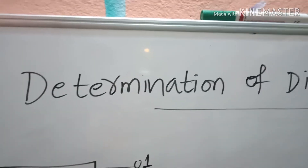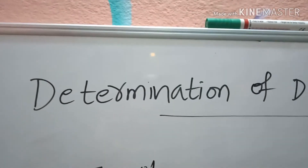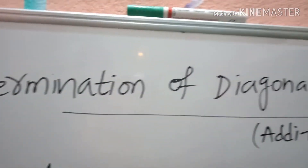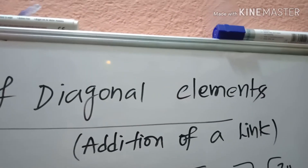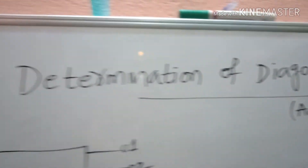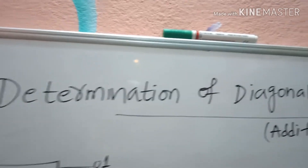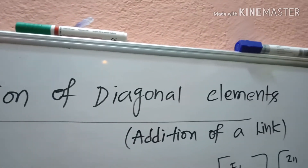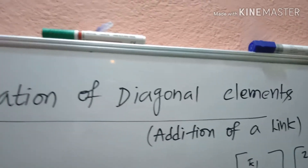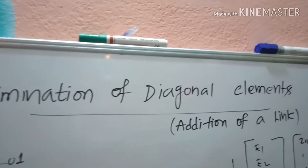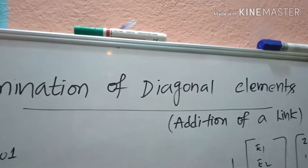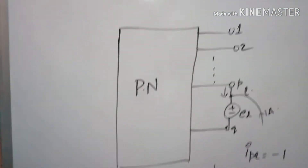Hi friends, good morning to one and all. In this video we will see the determination of diagonal elements when there is an addition of a link. In the last video we saw the determination of half diagonal elements when a link is added to the partial network. Now in this video we will see the determination of diagonal elements when a link is added to the partial network.